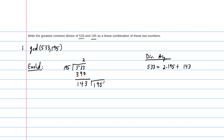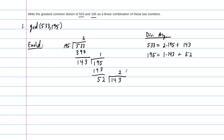Now we do another division. 143 goes into 195 once; we subtract and are left with 52. So the next step is: 195 is equal to 1 times 143 plus 52. Then 52 goes into 143 — it cannot go three times, only twice — giving us 104. We subtract and are left with 39. So: 143 is equal to 2 times 52 plus 39.